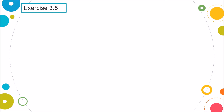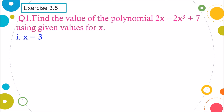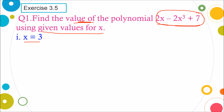Practice Set 3.5, Question 1: Find the value of the polynomial 2x minus 2x cube plus 7 using the given values for x. The first value of x is given as 3. So what is the polynomial? It's 2x minus 2x cube plus 7, and we have to find the value of this polynomial.